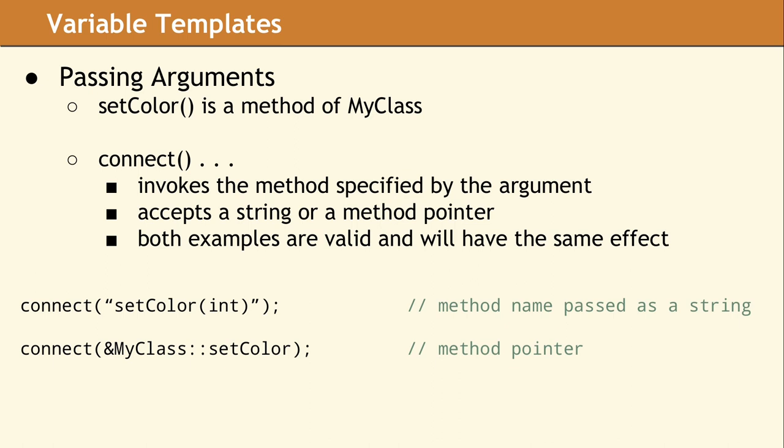Before C++11, the only way to specify which method to invoke was by passing the name of the method and its arguments as a string. The first example shows the slot method is setColor and the argument is an int.